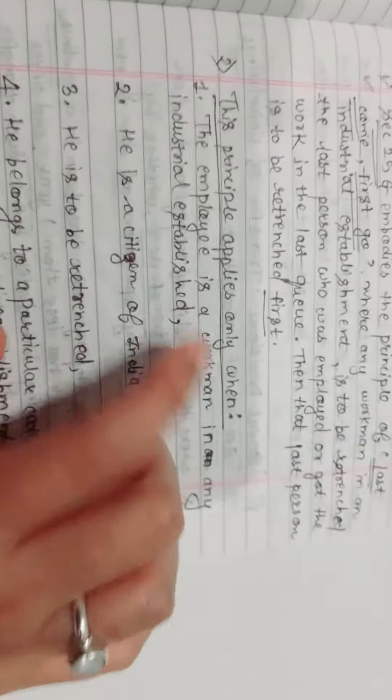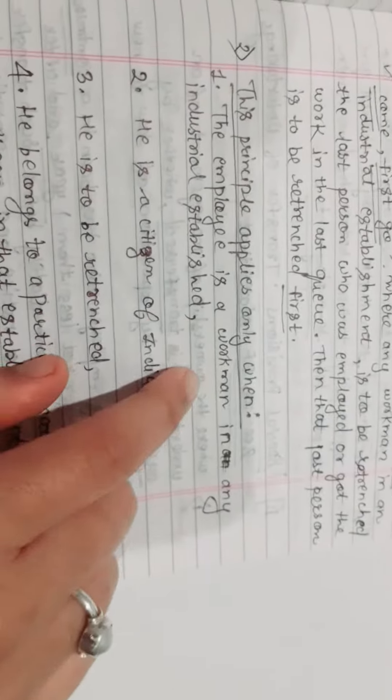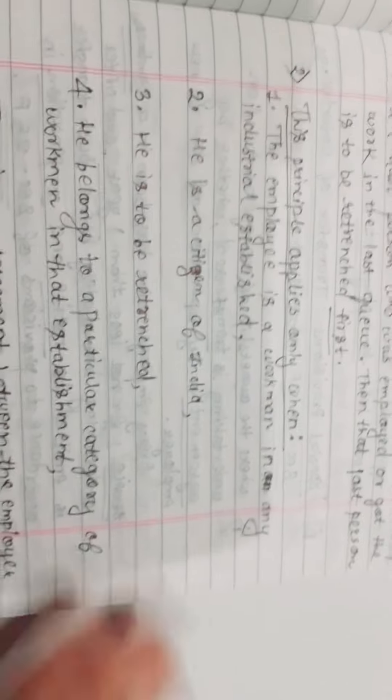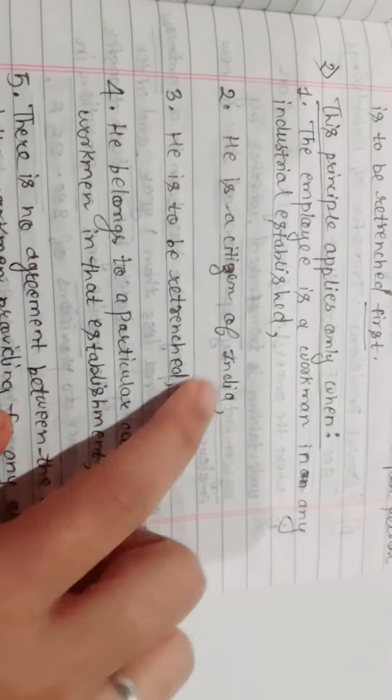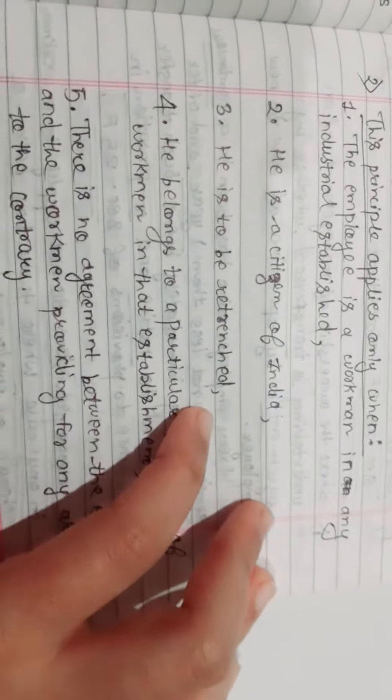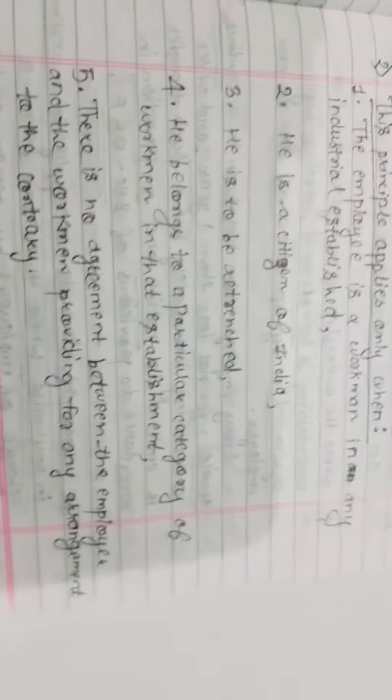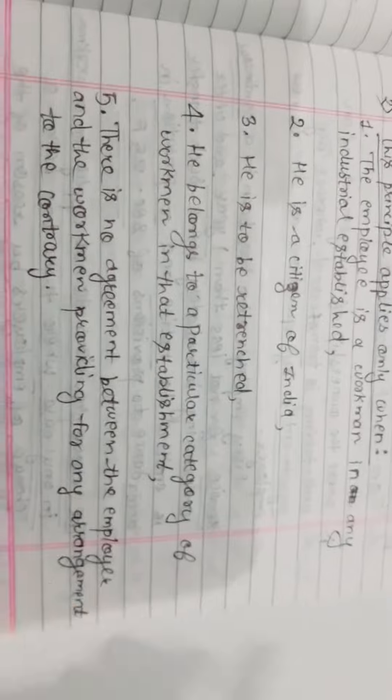This principle applies only when these conditions are fulfilled. First, the employee is a workman in any industrial establishment. Then he is a citizen of India. Then he is to be retrenched and he belongs to a particular category of workmen in that establishment.